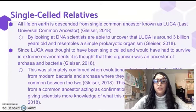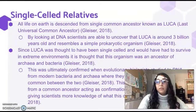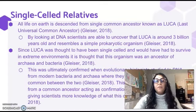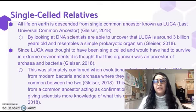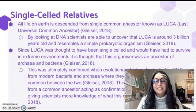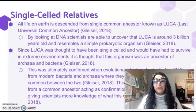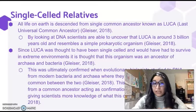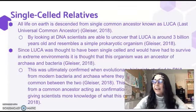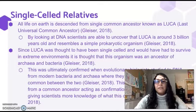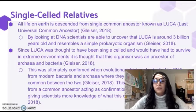Moving into where humans evolved from in the first place — thinking back to Charles Darwin, when he first proposed that humans evolved from a common ancestor as chimpanzees, people were absolutely disgusted. Now scientists have discovered that our common ancestor is actually more primitive than chimpanzees — it's actually a single-celled organism. We all descended from a single-celled organism.